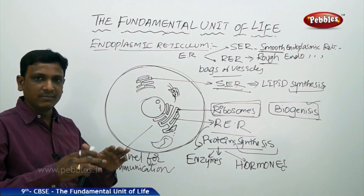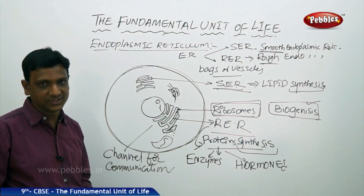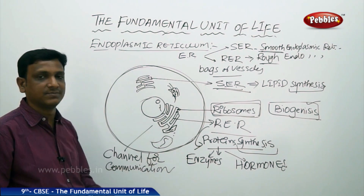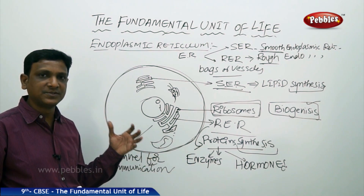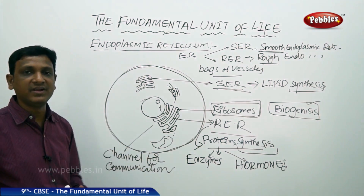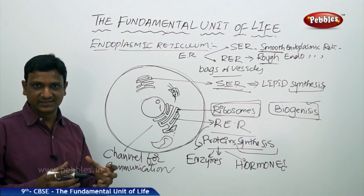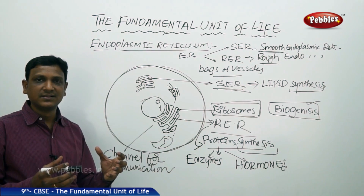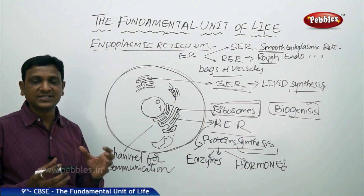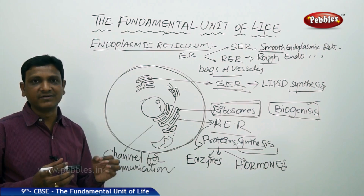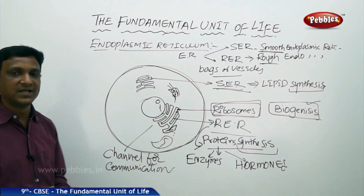The endoplasmic reticulum provides a surface for many important biochemical reactions that take place on its surface. In this way, the endoplasmic reticulum helps greatly in the biochemical activity of the cell — in the production of useful materials such as proteins in the form of enzymes or hormones or other metabolites, which are essential for carrying out important reactions inside the cell.